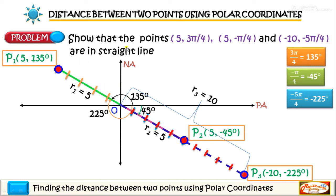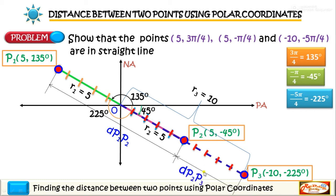In the given statement, we are going to prove that these three points P1, P2, and P3 are collinear or in a straight line. We will show that the distance from P1 to P2 plus the distance from P2 to P3 is equal to the distance from P1 to P3, using the formula we derived earlier.